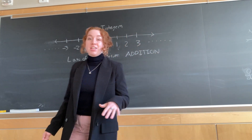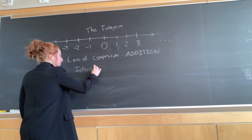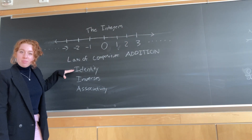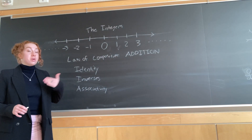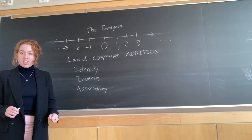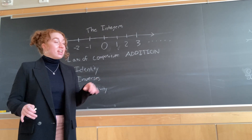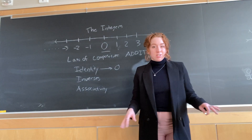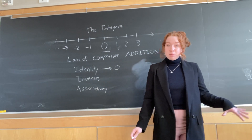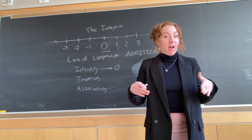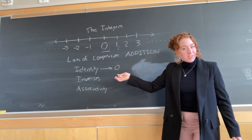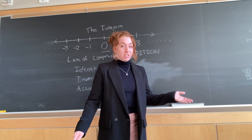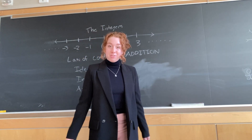Next, we have to make sure that integers meet all three laws of groups: identity, inverses, and associativity. For the identity element, we need to think of an element of the integers that when you combine it to another element, the element remains unchanged. In other words, we need an element that when you add it to another element, you still get that other element. Zero. Next, we need inverses. Inverses are two elements that when combined give you the identity. Any positive number combined with its negative counterpart gives you zero. Thus, every element in the integers has its inverse element, which is its negative counterpart.